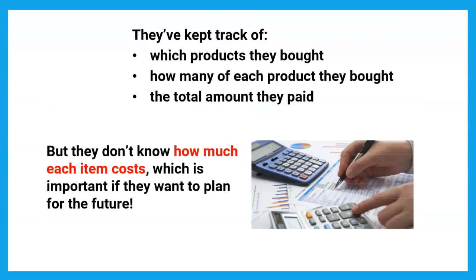They've been keeping track of what products they bought from pet stores — pet food, treats, and things to care for the pets — and how many of each they bought, and the total amount they paid on each visit, but they didn't keep track of the individual prices for each item. So they don't know how much each costs, and if they don't know that, they can't plan for the future. Now they're trying to go back and figure out what each product cost based on the information they did collect.